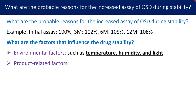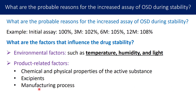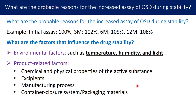The second factor is product-related factors. These could be the chemical and physical properties of the active substance, the excipients used in manufacturing, the manufacturing process, and the container closure system or packaging materials. These are the likely influencing factors on drug stability.